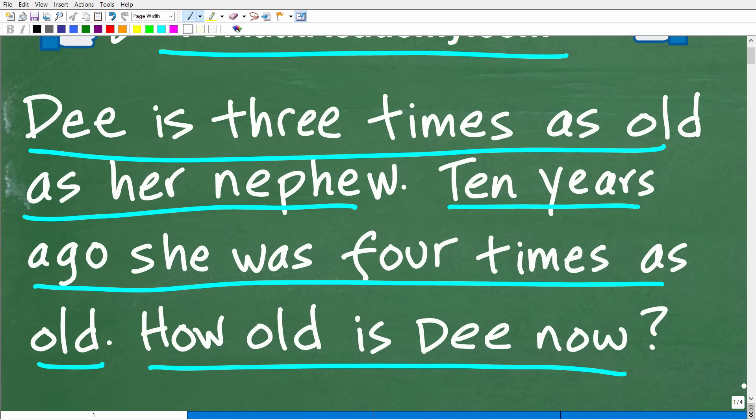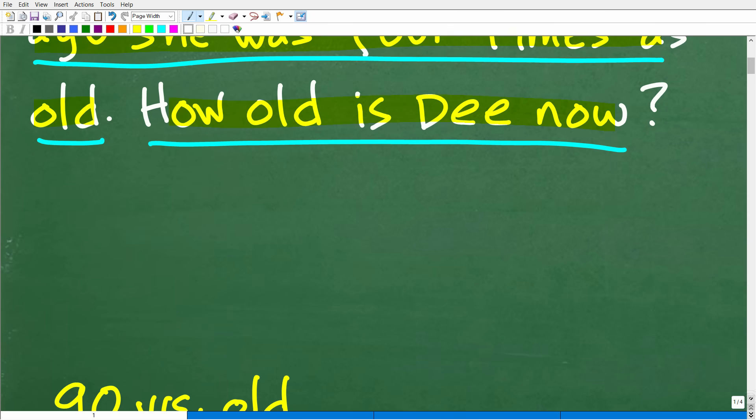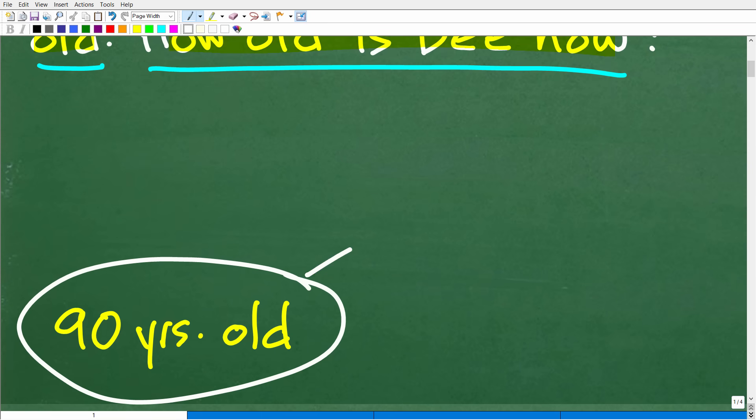Okay, so one more time, let's take a look at the question before I show you the answer. Dee is three times as old as her nephew. Ten years ago, she was four times as old. How old is Dee right now? Well, let's go ahead and see the answer. The correct answer is the following: Dee is 90 years old.